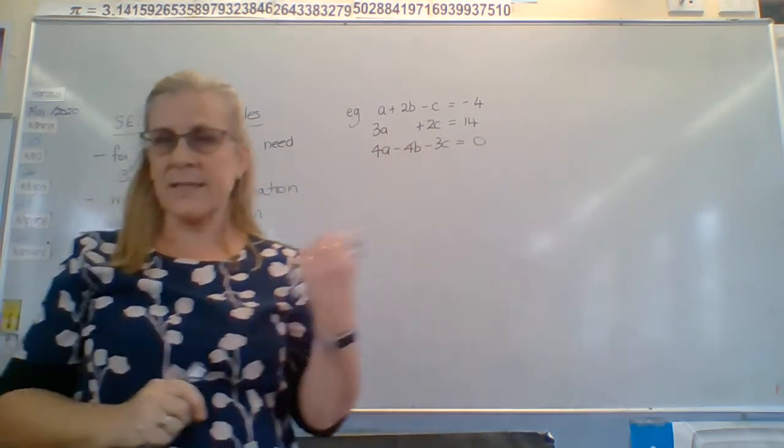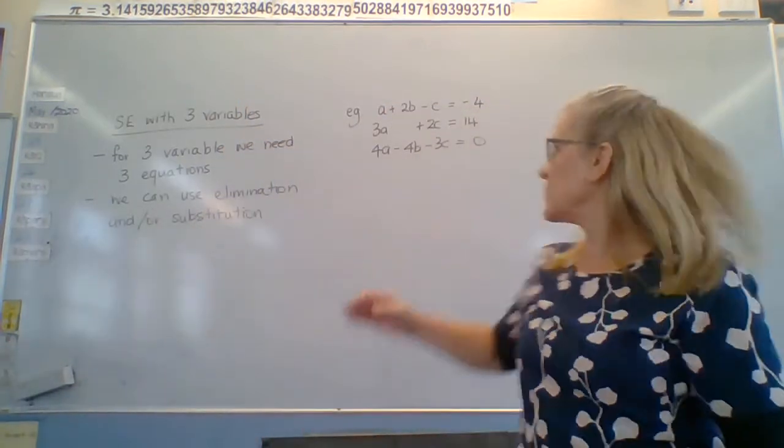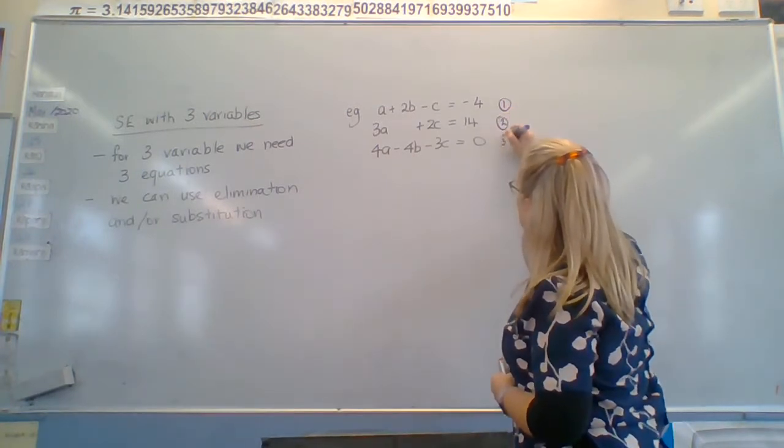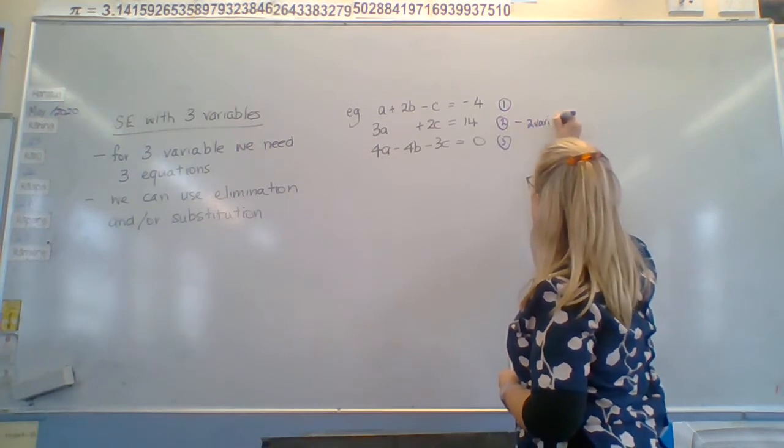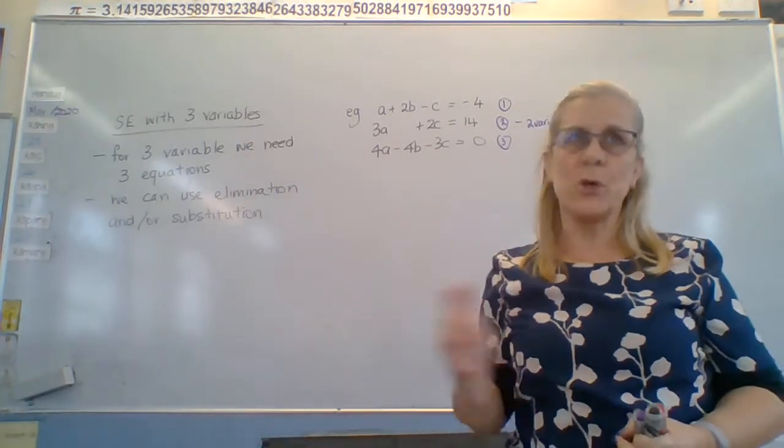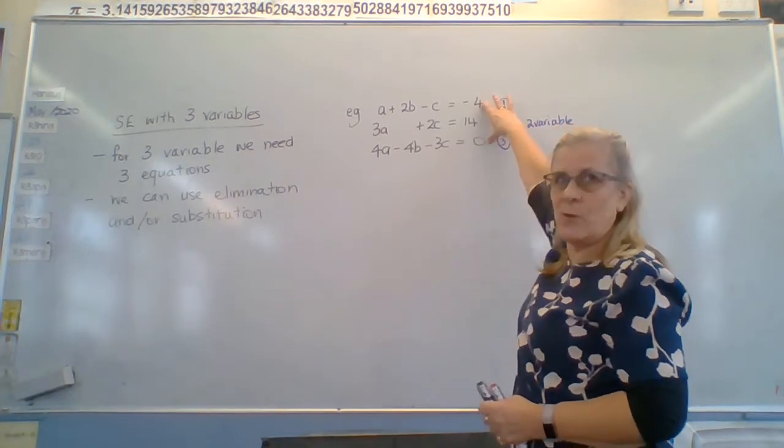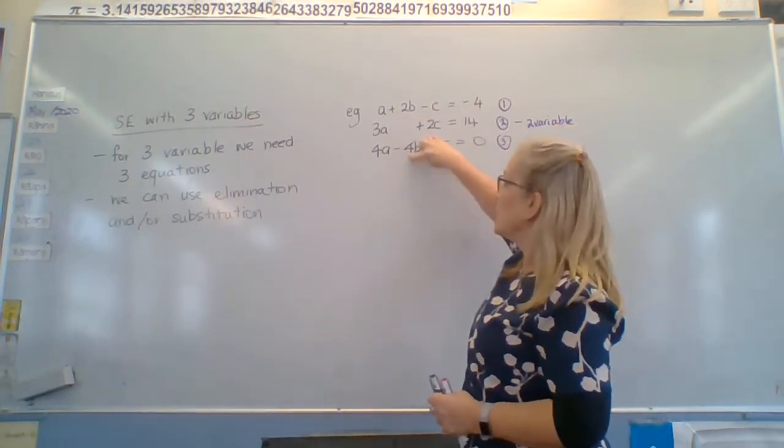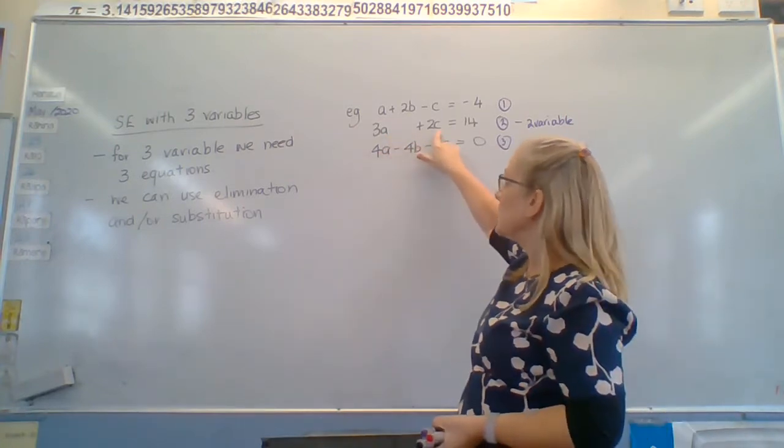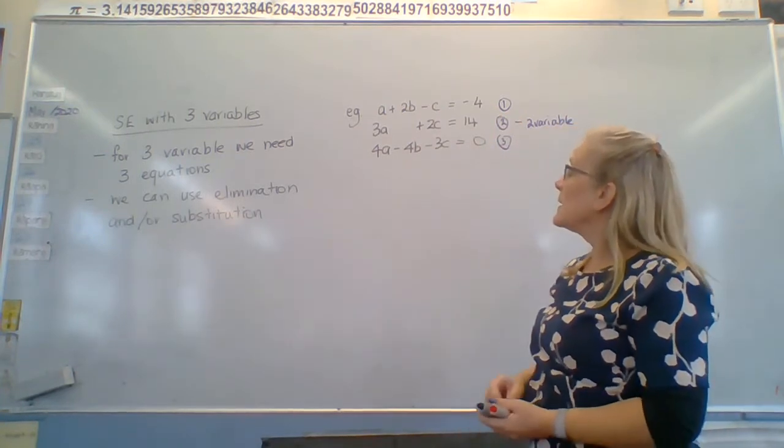So as I said, this one already has one of them in two variables. So equation two is already in two variables, which is great. Now we need another equation because we need two equations with two variables to be able to get rid of one. So we need to use the other two and get rid of b. Because it has to be the same one we get rid of. We need two equations in terms of a and c. So we're going to use one and three and get rid of b. So what would we do?